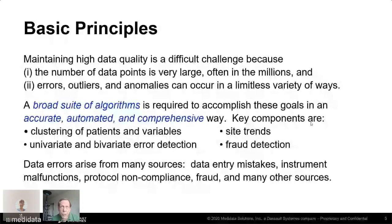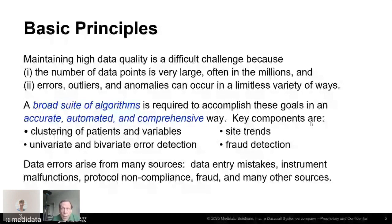Maintaining high data quality is a lot easier said than done because there's an enormous number of data points — usually in the millions — and outliers, errors, and anomalies can occur in a limitless variety of ways. We need to do this in an accurate, automated, and comprehensive way. Key components include clustering of patients and variables, univariate and bivariate error detection, site trends, and fraud detection. These errors arise from data entry mistakes, instrument malfunctions, protocol non-compliance, fraud, and more.